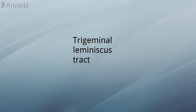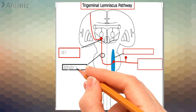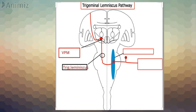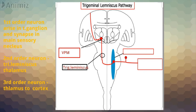The next section is the trigeminal lemniscus tract. Fibers arising from the nuclei of the trigeminal nerve form the trigeminal lemniscus, which is one of the ascending pathways. It joins the medial lemniscus ascending tract and ends in the ventroposterior medial nucleus of the thalamus, then passes to the cortex. The first-order neuron arises from the trigeminal ganglion and synapses in the main sensory nucleus; the second-order neuron passes to the thalamus as the trigeminal lemniscus; and the third-order neuron runs from thalamus to cortex.